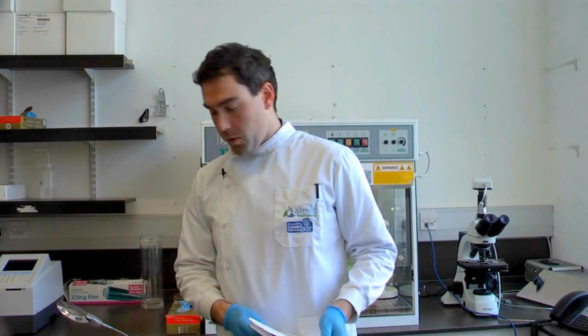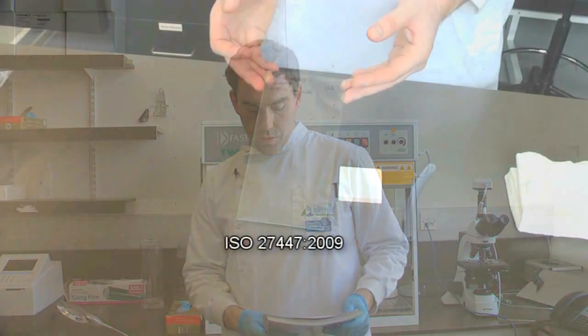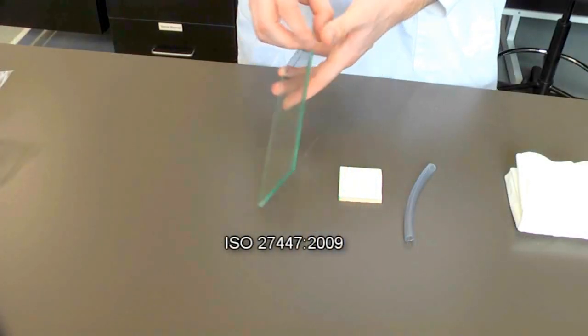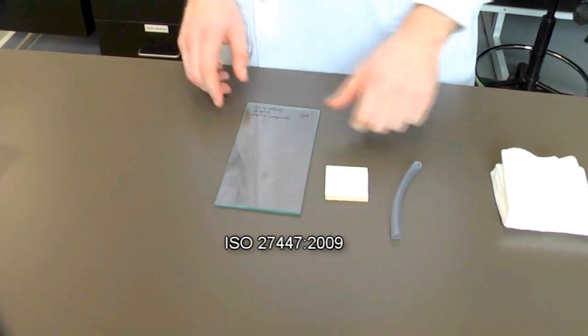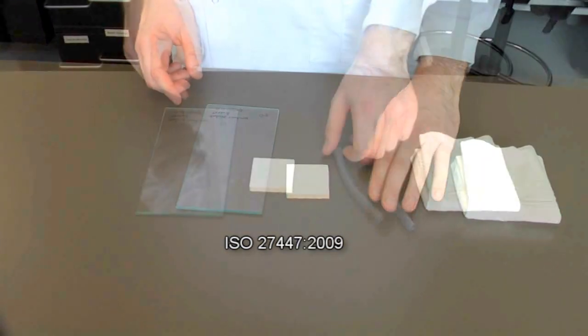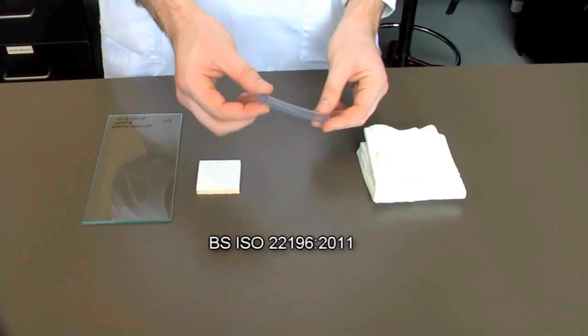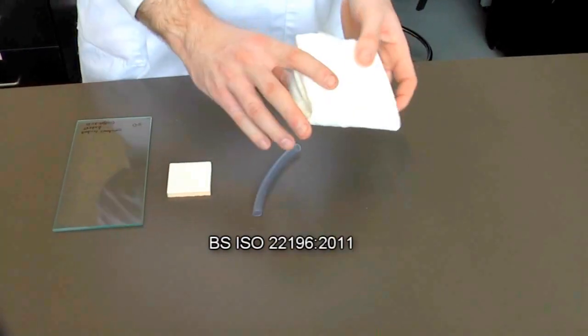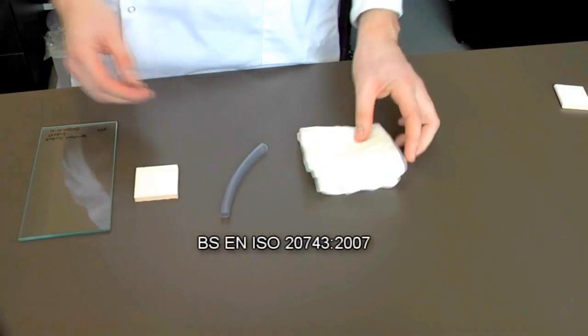We do three main antimicrobial surface validation study tests here which include ISO 27447-2009, which is for advanced technical ceramics but can also be for glass and plastic. ISO 22196, which is particularly for plastics and other non-poured surfaces, and ISO 20743, which is primarily just for textiles only.